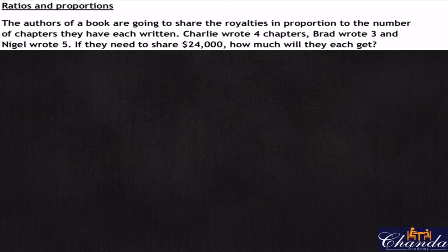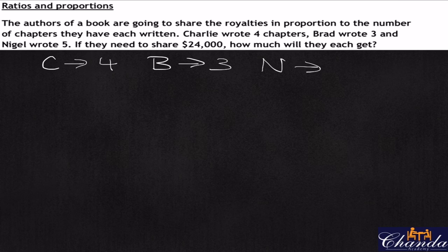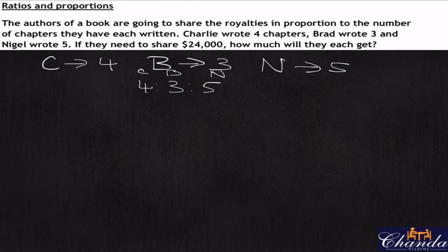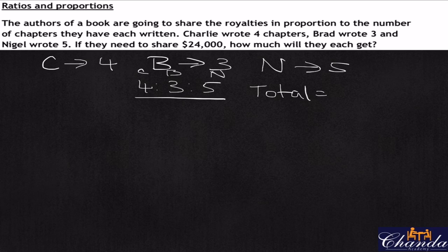Let's first write out the most important parts of the information. We have Charlie at four, Brad at three, and Nigel at five. So if you were to look at this as a ratio, we would have four to three to five — C, B, and N. The total number of chapters written is four plus three plus five, which is 12 chapters altogether.